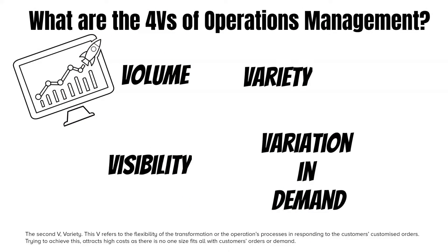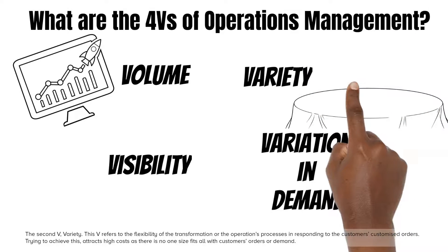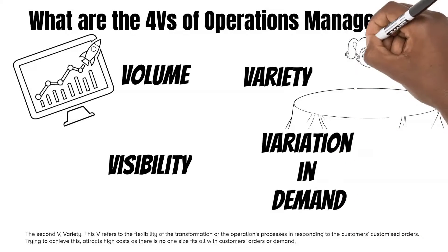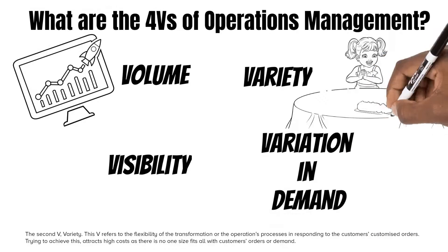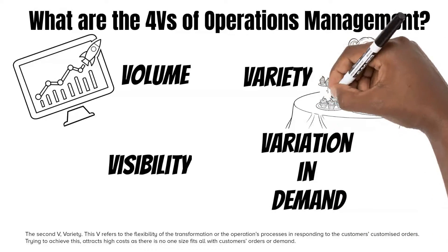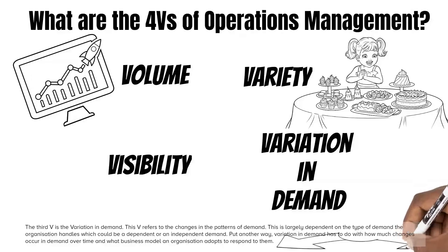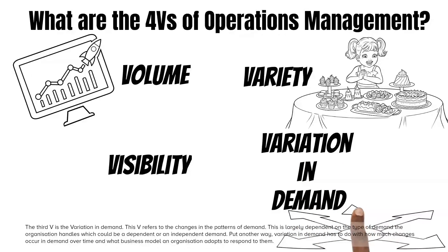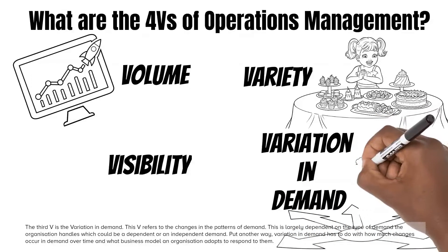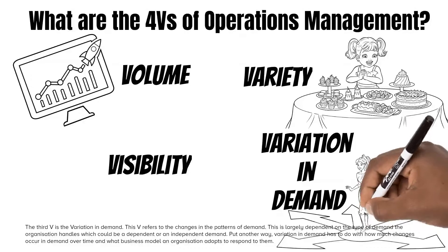The second V is variety. This V refers to the flexibility of the transformation or the operations processes in responding to the customer's customized orders. Trying to achieve this attracts high costs as there is no one-size-fits-all with customer's orders or demand. The third V is variation in demand. This V refers to the changes in the patterns of demand, largely dependent on the type of demand the organization handles, which could be a dependent or an independent demand. Variation in demand has to do with how much change occurs in demand over time and what business model an organization adopts to respond to them.